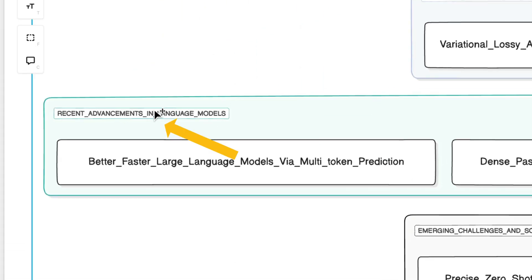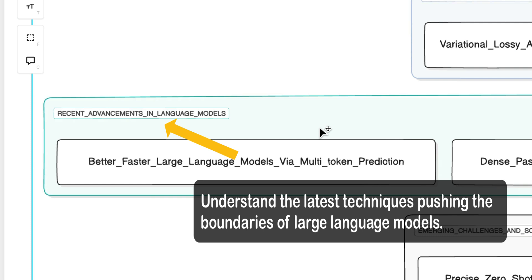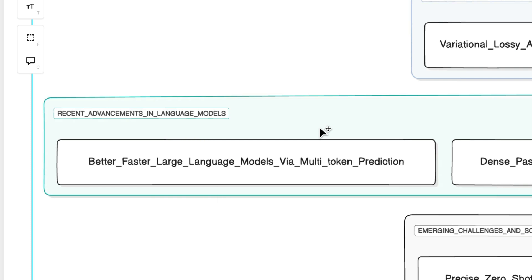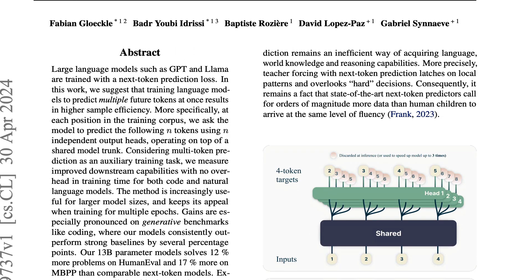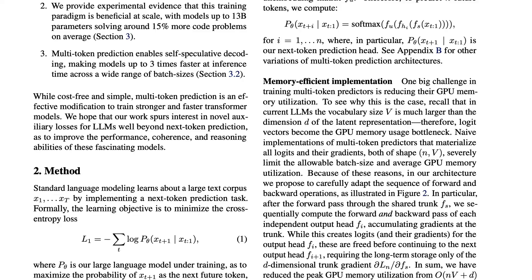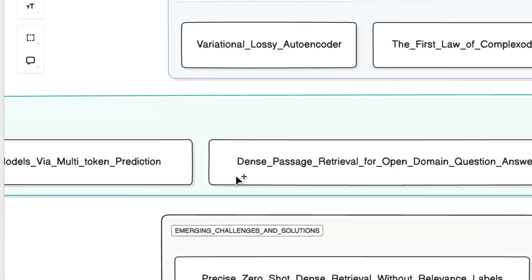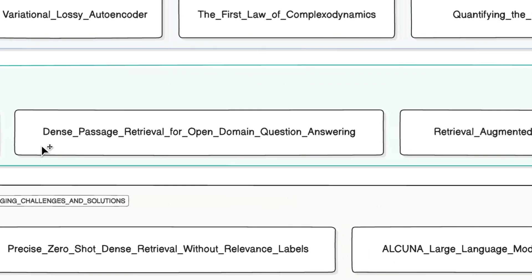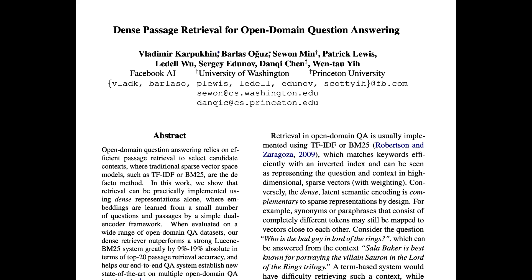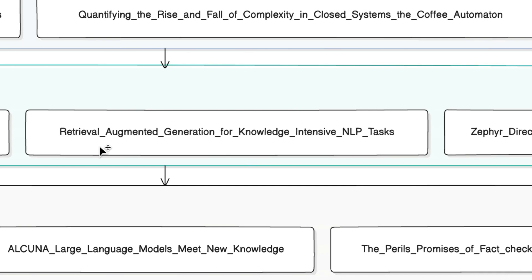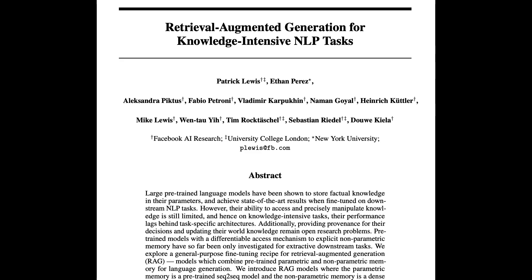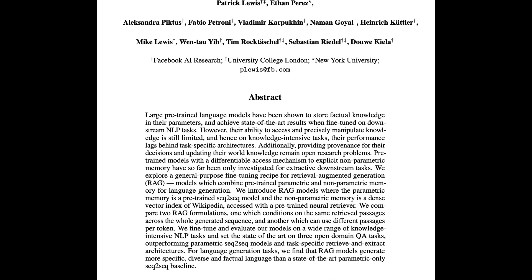To understand recent advancements in language models, this category covers the latest techniques pushing the boundaries of large language models. First, 'Better, Faster Large Language Models via Multi-Token Prediction' — learning about improving LLM efficiency through multi-token prediction. Then 'Dense Passage Retrieval for Open Domain Question Answering,' exploring modern techniques for information retrieval in QA systems. And 'Retrieval Augmented Generation for Knowledge-Intensive NLP Tasks' — understanding how to enhance LLMs with external knowledge, explaining how all your RAG applications came into being.